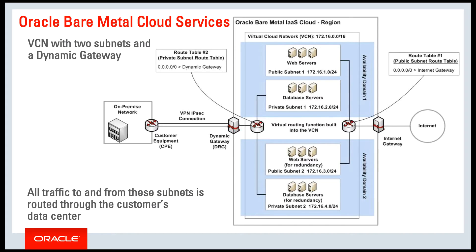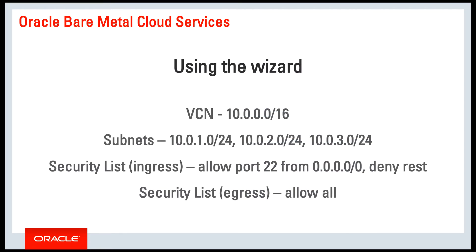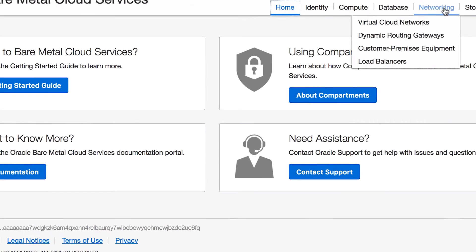Here's an example of a mixed virtual cloud network. Two of these subnets access the internet directly. The other two use the VPN connectivity to the customer's on-premises network.